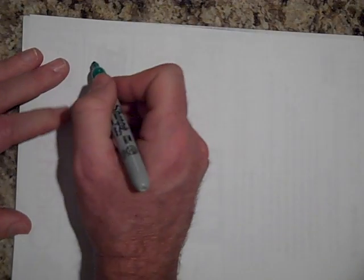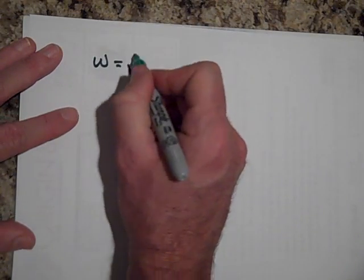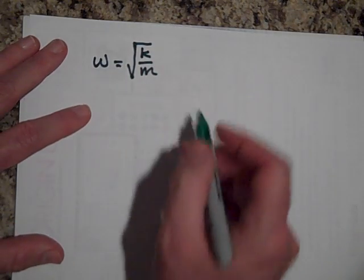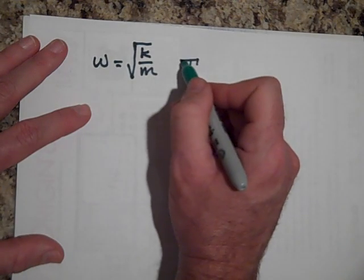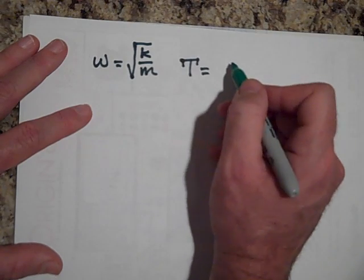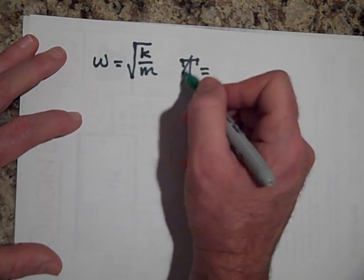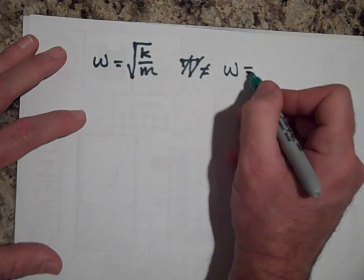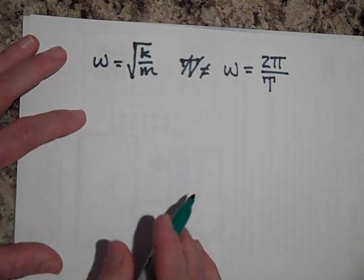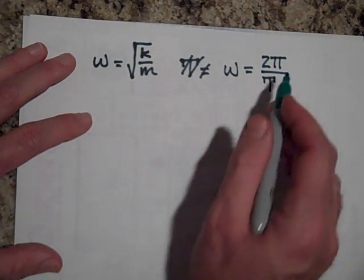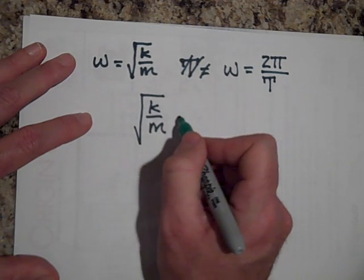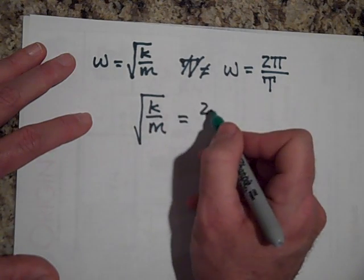That since omega is equal to the square root of k over m, and the period... omega is also equal to 2 pi over the period. Then let me set these two equal to one another. So the square root of k over m is equal to 2 pi over the period.